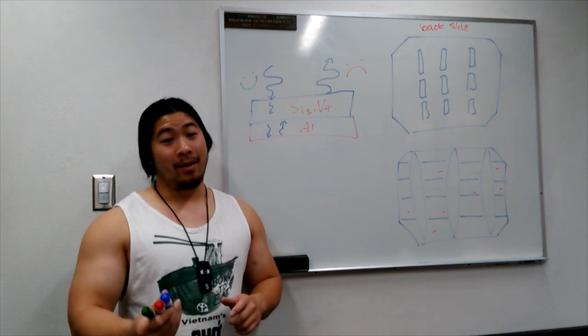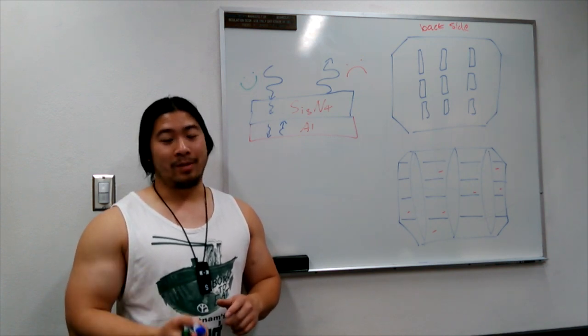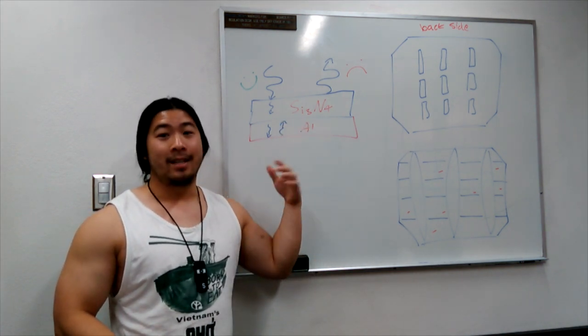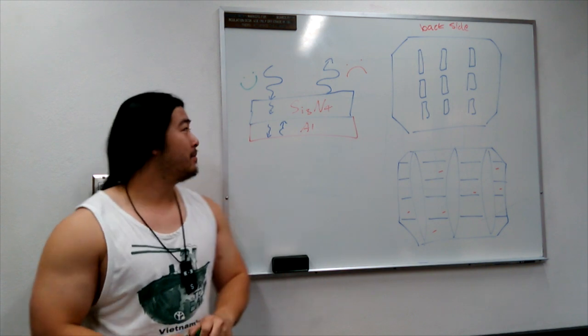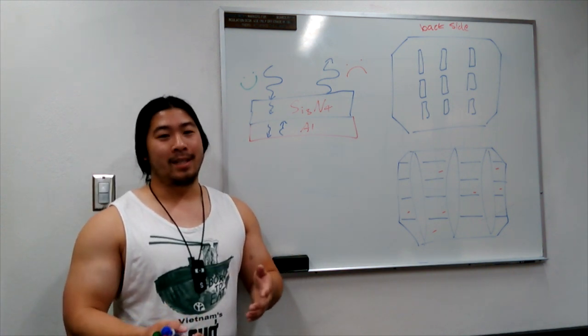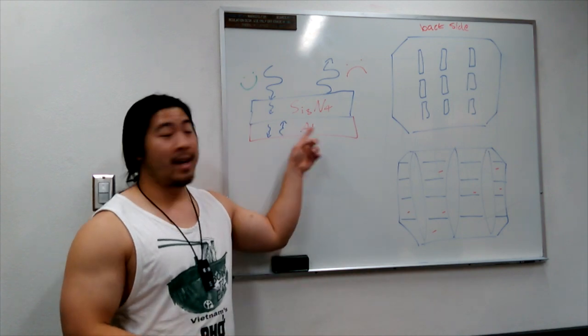The anti-reflective coating will assist in the absorption of light, which is a good thing. We want these photons to go into the solar cell to create electricity. So we're going to place the wafers into another machine where we deposit a silicon nitride layer, Si3N4.